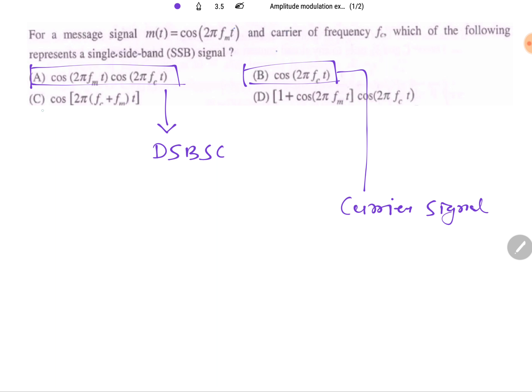Now if you see third option C, that is having frequency component fc plus fm, means it is upper sideband. Only one sideband is there, it means it is SSBSC signal. And if you see fourth equation, that is somewhat similar to AM standard form.